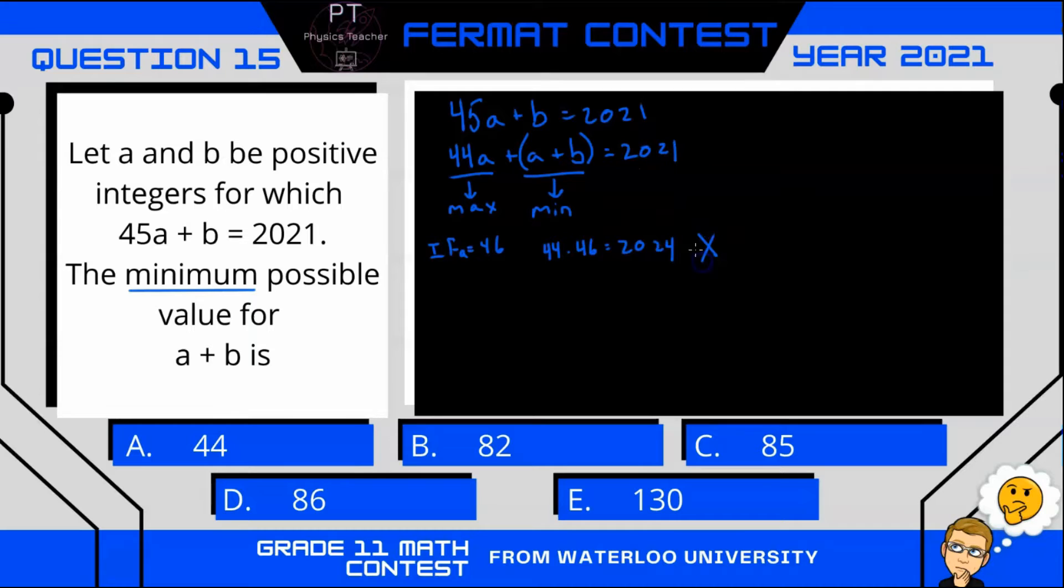Okay, what if a is 45? Well then we have 44 × 45, and that's going to equal 1980. Okay, well this is definitely less than 2021. Let's see if this will work for us.